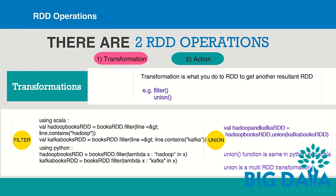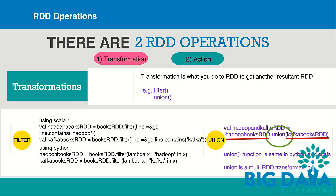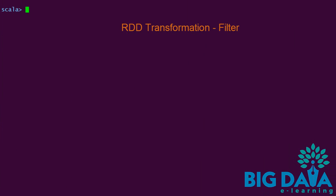Now that we have filtered Hadoop and Kafka books, we can combine all the elements in those RDDs to create a resultant RDD called Hadoop and Kafka RDD. This combining of elements from two RDDs is done using union transformation. Union is a multi-RDD transformation, which means it acts on more than one RDD. Let's try these RDD transformation examples — filter and union — in Spark Shell.